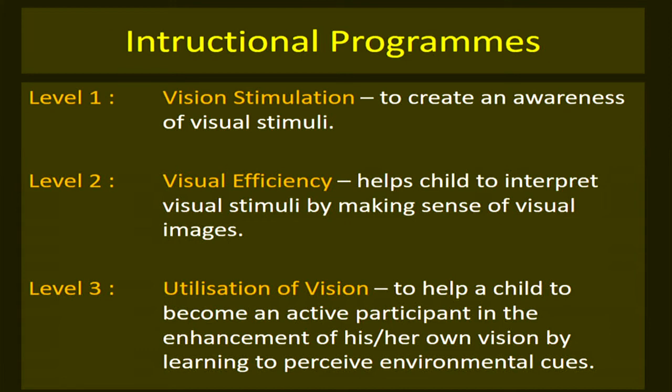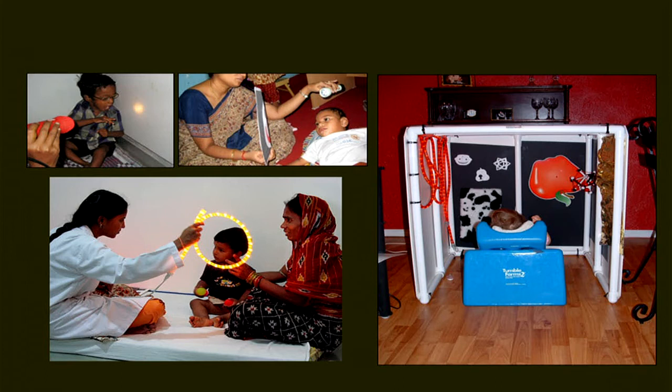After functional vision assessment, the child enters an instructional program at three levels: first, vision stimulation — teaching recognition of dark, light, the meaning and source and shape of light; then visual efficiency training; then utilization of vision. A vision box is used to train children in appreciating light. Such patients with profound visual loss are referred to the Blind People's Association in Ahmedabad or the National Institute for the Visually Handicapped at Dehradun.